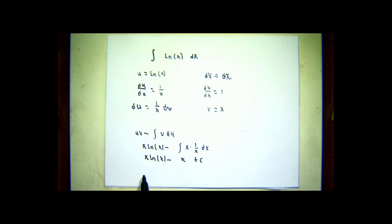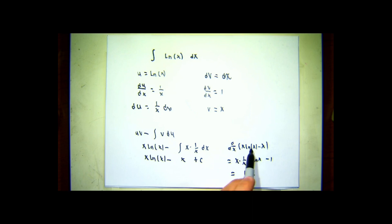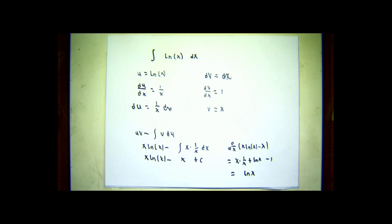This is the integral of 1 with respect to x, which is x. Allegedly, the derivative of x natural log x minus x plus a constant should be natural log of x. Again, using the product rule, this isn't very difficult to see. The derivative of x natural log x is the first function, x, times the derivative of natural log, which is 1 over x, plus the second function, natural log x, multiplied by the derivative of x, which is 1, minus the derivative of x. After simplifying, we get natural log of x, just like we're supposed to.